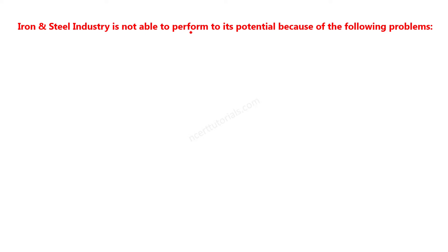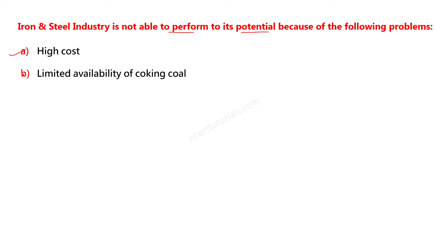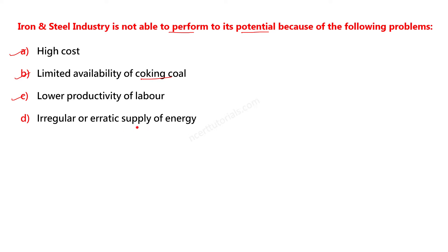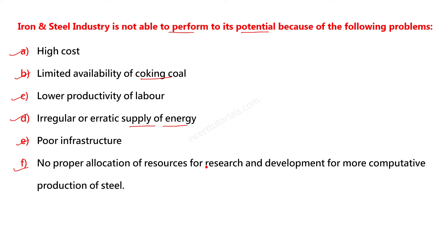Iron industry کی جو capacity اور potential ہے اس حساب سے وہ develop نہیں ہو پا رہی۔ Poor performance کی وجوہات میں high cost، coking coal کی limited availability، labor productivity کا کم ہونا، irregular power supply اور poor infrastructure یعنی railways، roadways، bridges اور airways کا ناقص network شامل ہے۔ اس کے علاوہ research and development کے لیے proper allocation نہیں ہے۔